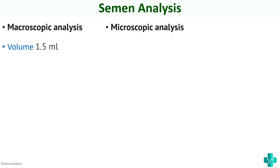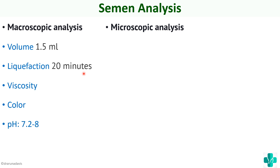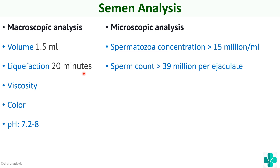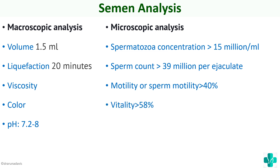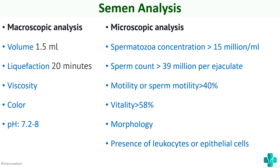On macroscopic analysis, the volume should be at least 1.5 ml per ejaculate. The liquefaction time is around 20 minutes — the consistency of semen changes after some time, and normal liquefaction time is around 20 minutes. Viscosity, color, and pH should be normal; pH should be between 7.2 to 8. On microscopic analysis, spermatozoa concentration should be more than or equal to 15 million per ml, the sperm count should be at least 39 million per ejaculate, motility should be more than 40%, vitality more than 58%, morphology should be normal, and there should be no significant presence of leukocytes or other cells hindering sperm development.